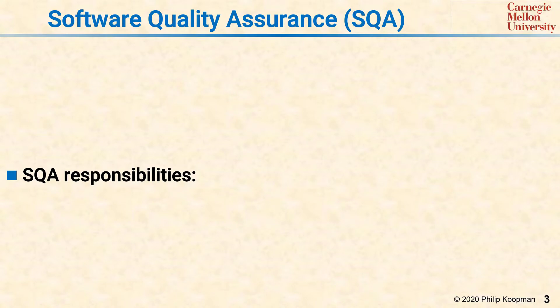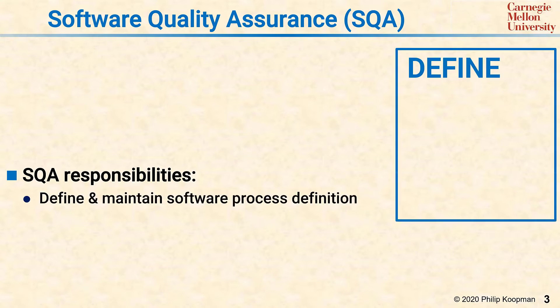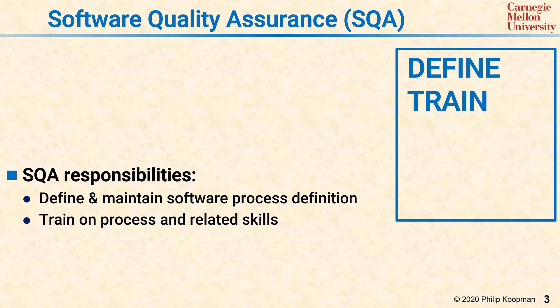Software Quality Assurance, SQA, is in charge of making sure that the software process is really working the way it should. There are five main responsibilities for SQA. The first is to define and maintain the software process definition. If the software process is not written down, everyone will have a different idea of what it might be and you'll never get consistent results. The next responsibility is to train on the process and make sure that everyone understands the process and has the skills they need to play their role in the overall picture.